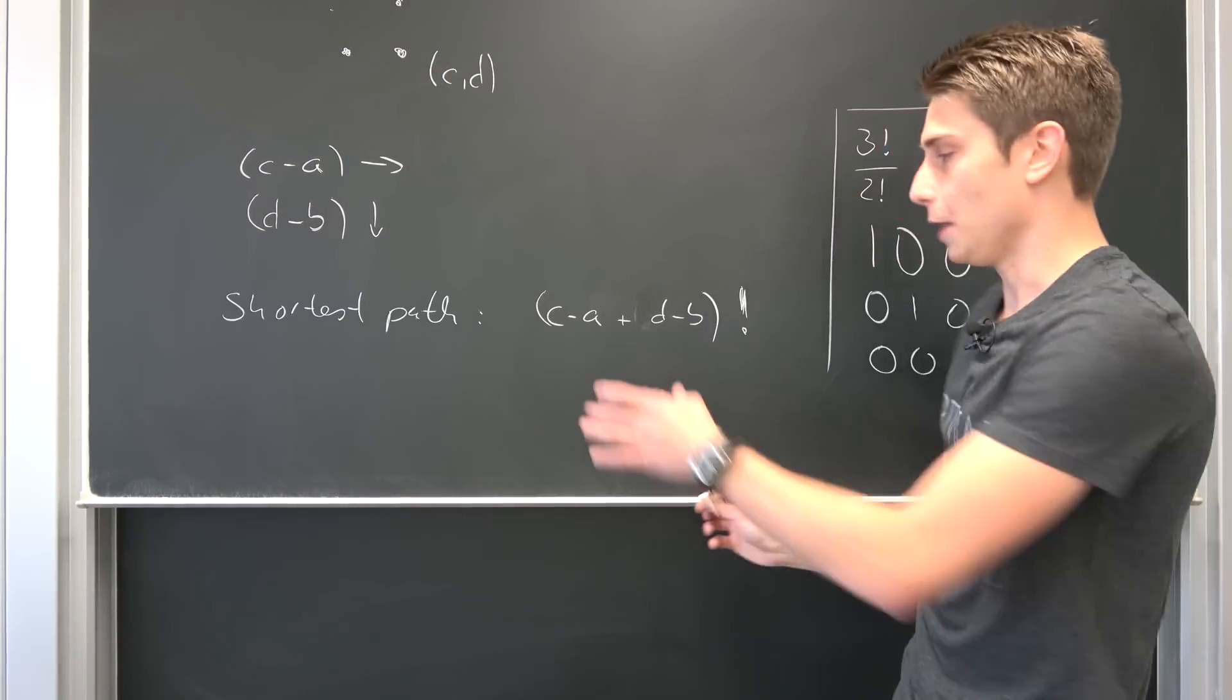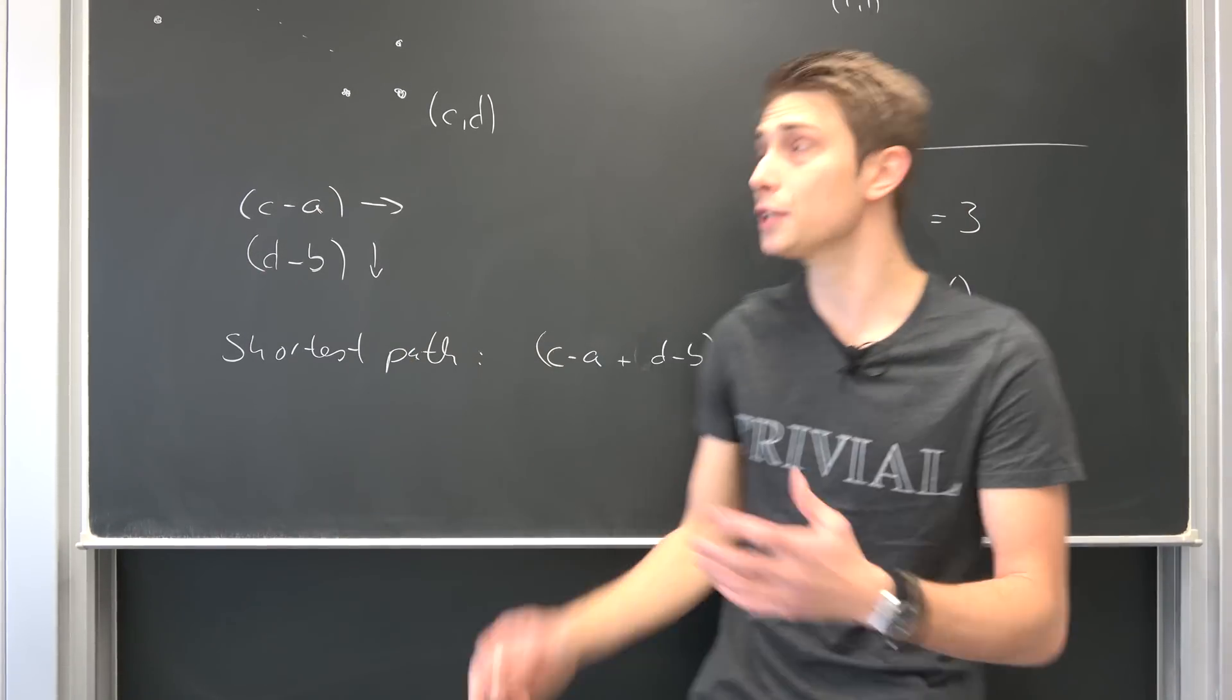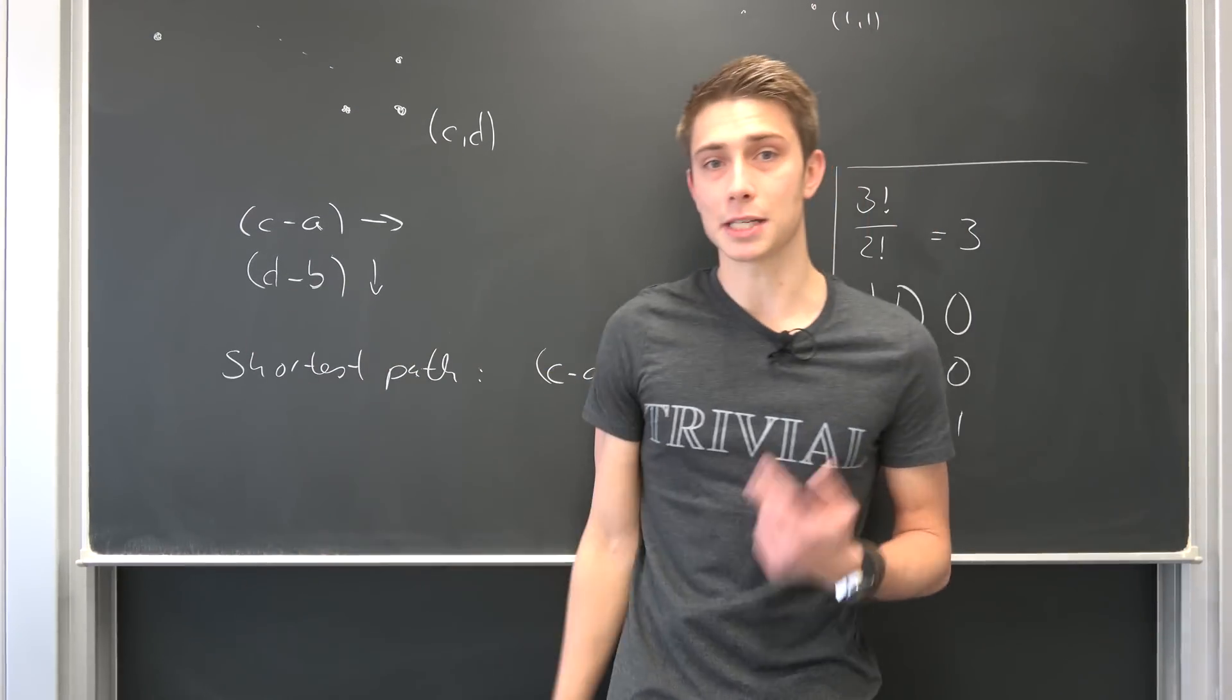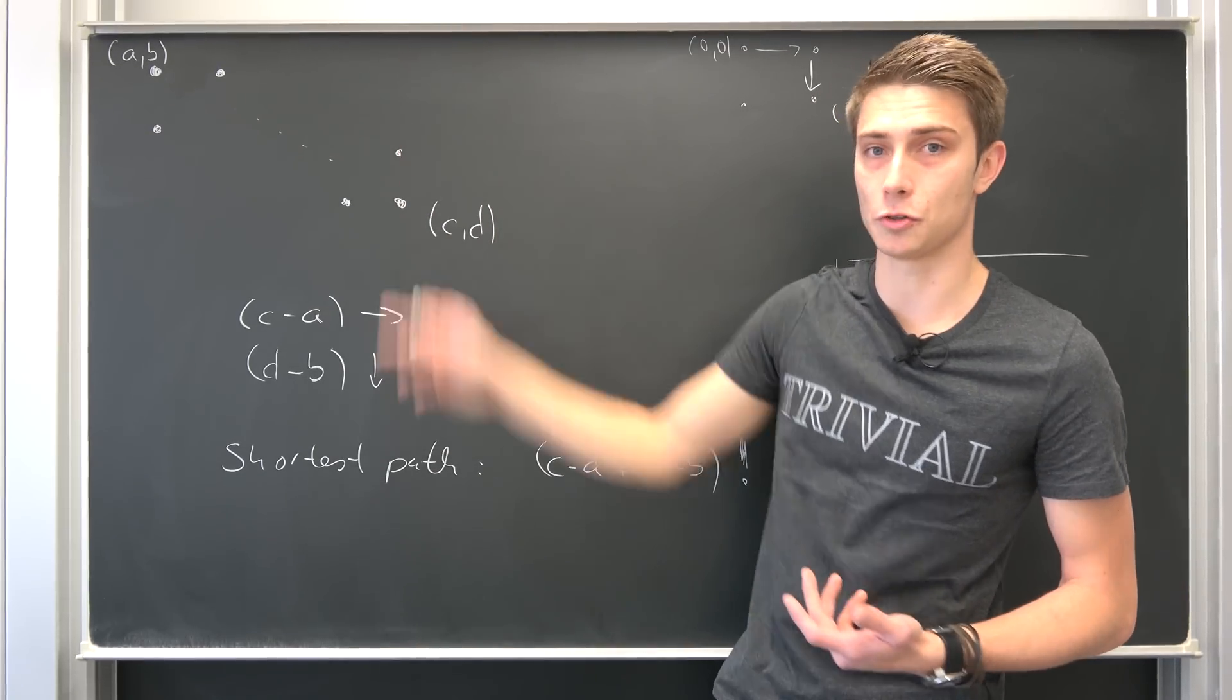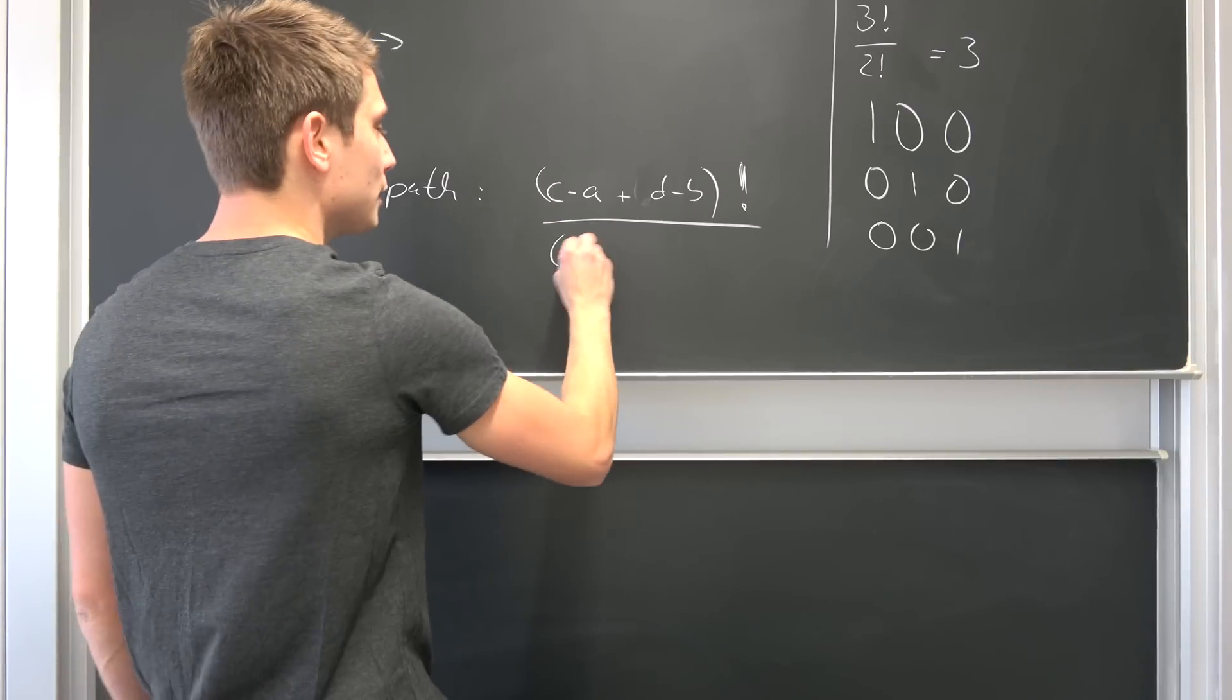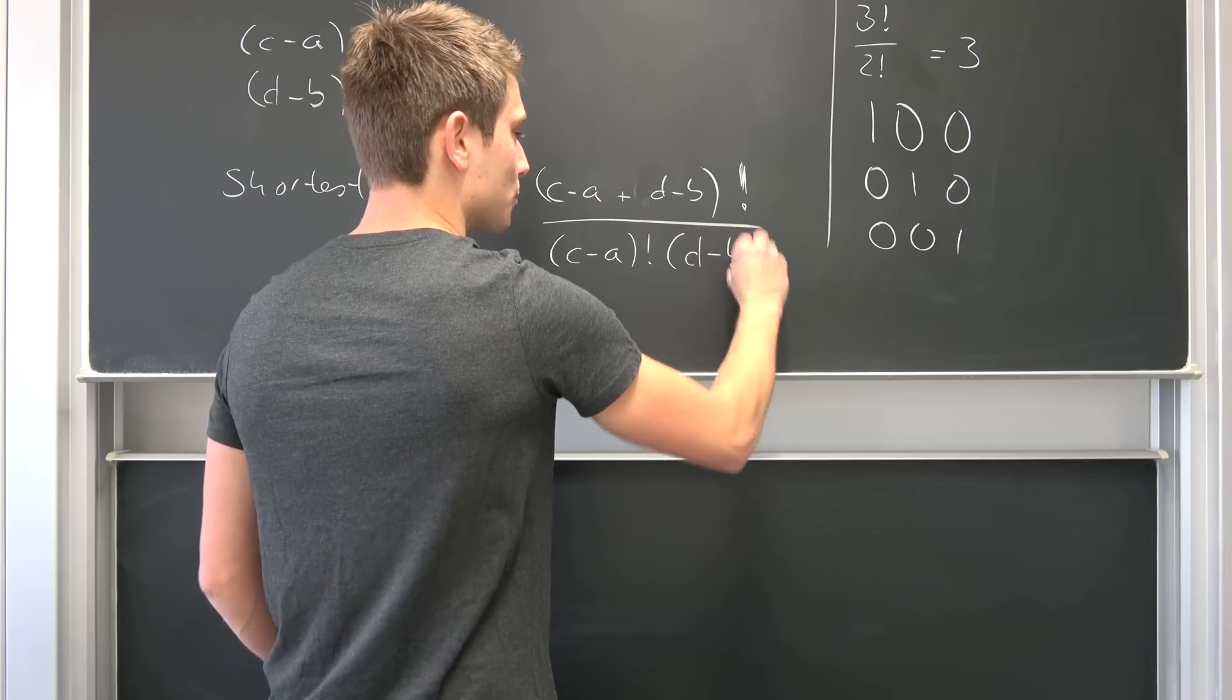So what do we have to do? We have to divide this right here by (c minus a) factorial, the ways to arrange those arrows from left to right. And also we have to divide this term by (d minus b) factorial, the amount of ways to go from up to down differently. So the amount of shortest paths is going to correspond to this term over (c minus a) factorial times (d minus b) factorial.